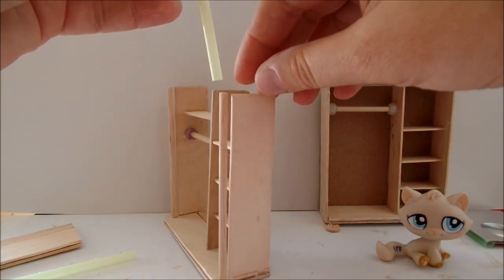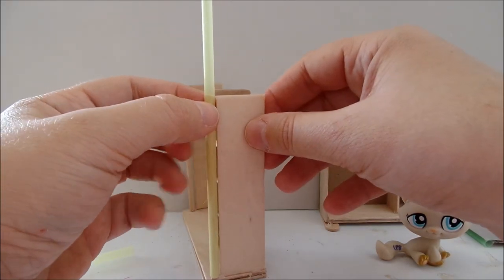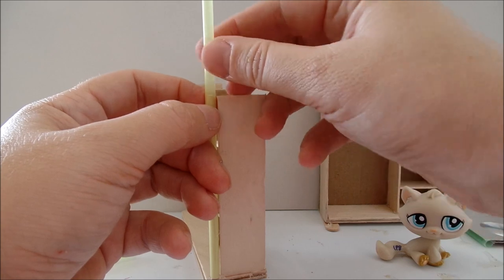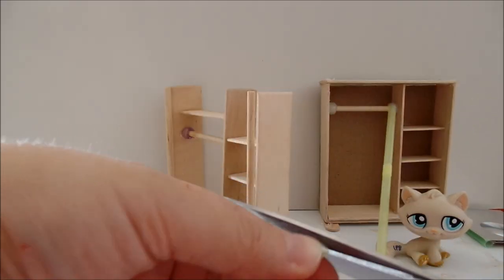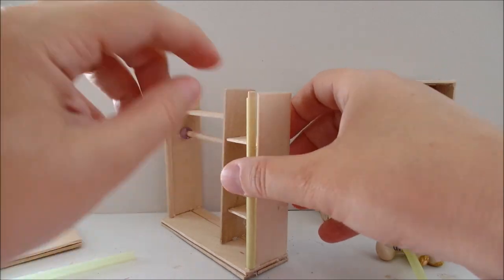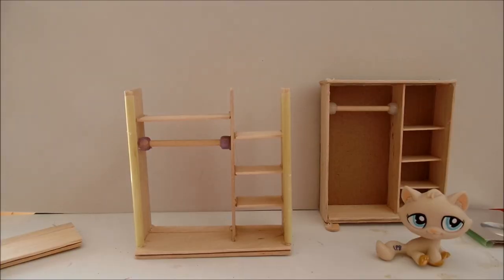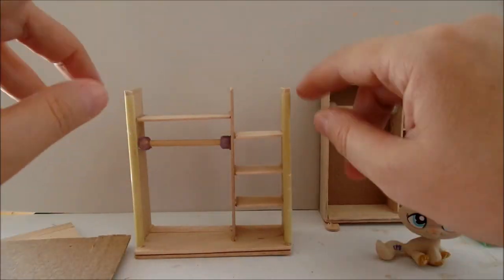Take two straws and measure the height of the straw. However, make it slightly lower than the dowel itself. Yes, that's the perfect height. Make two of these.